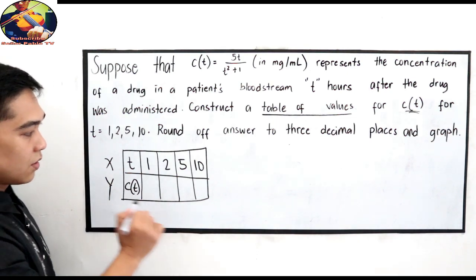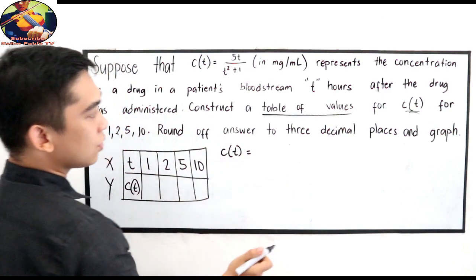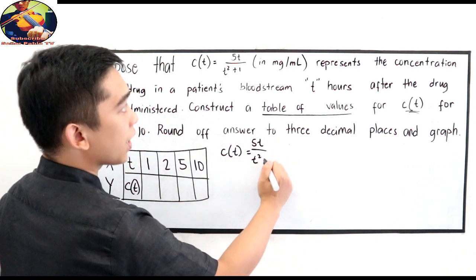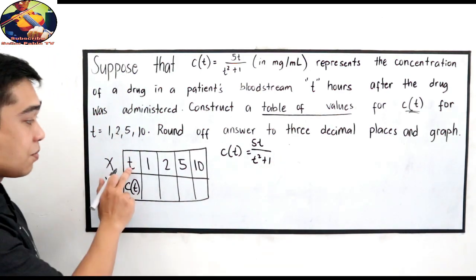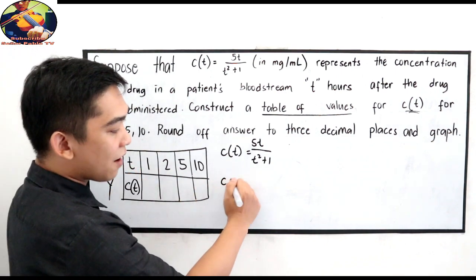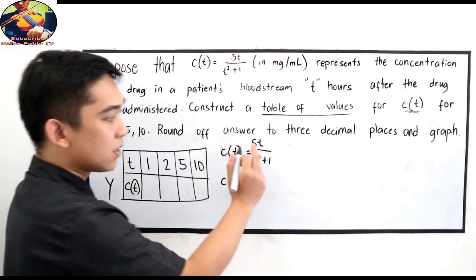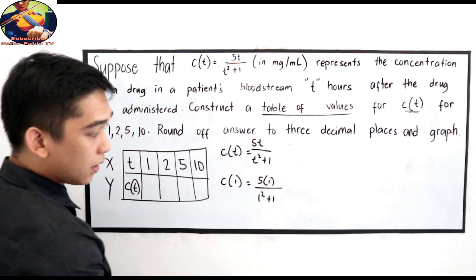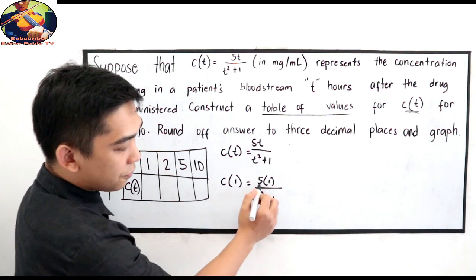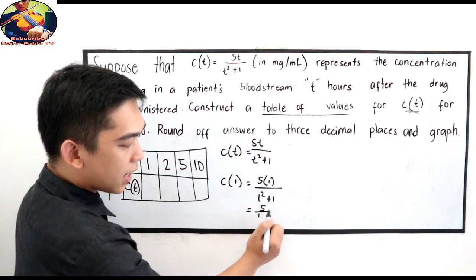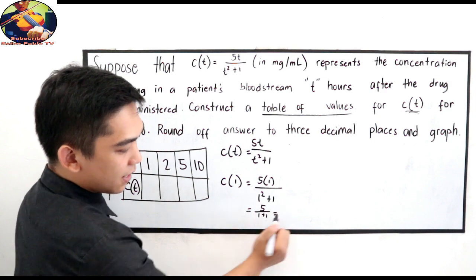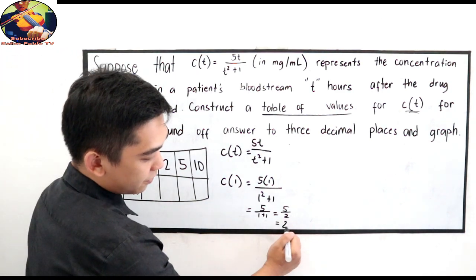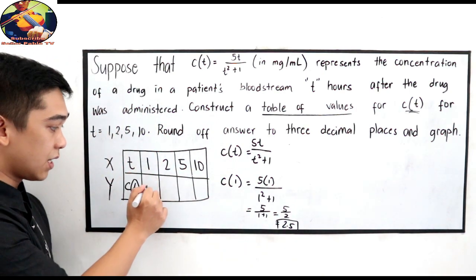Let's find C of T from our equation. So, let's substitute now. C of T is equal to our rational function, 5T all over T squared plus 1. So, we'll substitute using our hours as the value of T. So, if I have C of 1, 1 hour, so that is 5 times 1 all over 1 squared plus 1. And simplify, 5 times 1, 5 over 1 squared plus 1. That is 5 over 2. 5 divided by 2 is 2.5. So, in our table of values, we put 2.5 here.